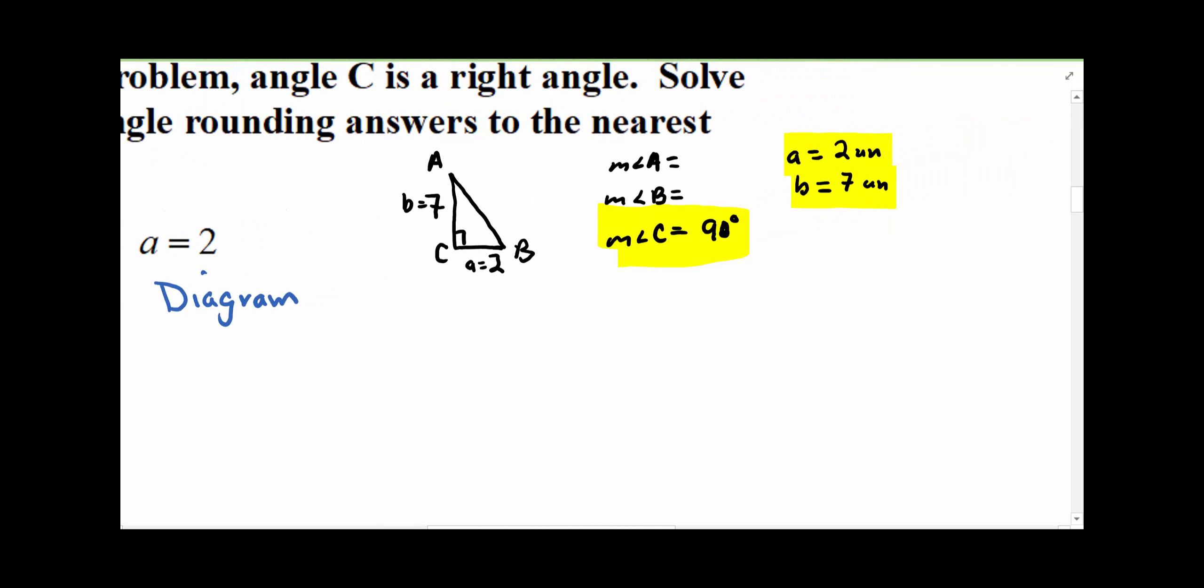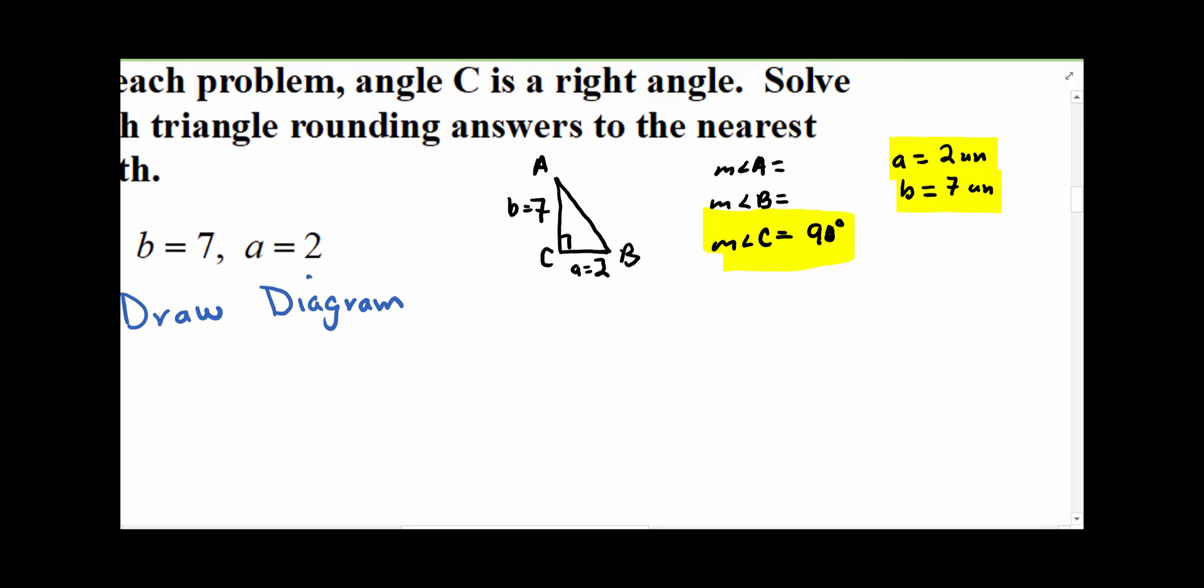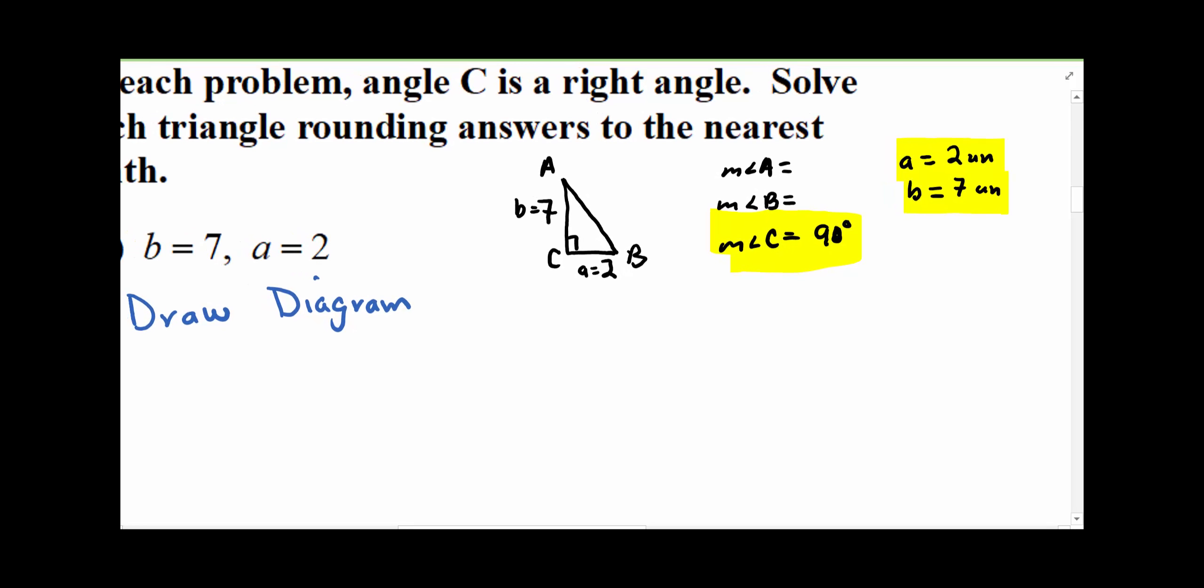All right, and then notice what I've done again. I've drawn the diagram, and side B is longer than side C, so I drew a triangle to reflect that. Not that it's in the correct proportion, but side A is shorter than side B, and I wrote all that stuff down.